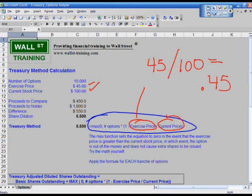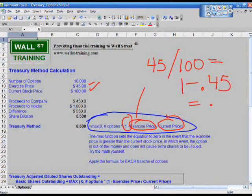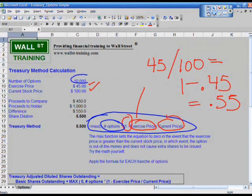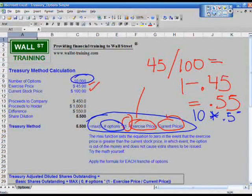Now let's take a look at the next part of this equation. We have 1 minus this particular quotient, so 1 minus that, 1 minus .45 equals .55. Now, how many options do we have? We had 10 options. So now you take 10 options, multiply by .55, and what do you have? You have 5.5 shares.